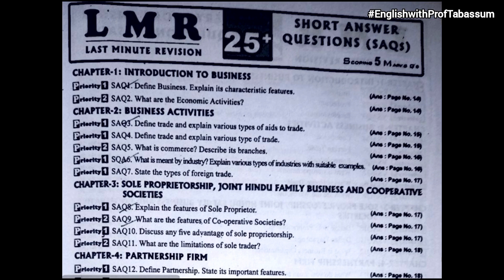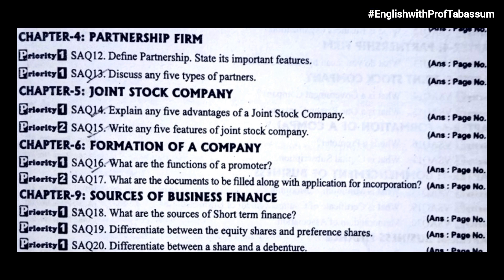Chapter 3, sole proprietorship, joint Hindu family business, and cooperative societies: explain the features of sole proprietorship; what are the features of cooperative societies; discuss any five advantages of sole proprietorship; what are the limitations of sole trader. Chapter 4, partnership firm: define partnership and state its important features; discuss any five types of partners.